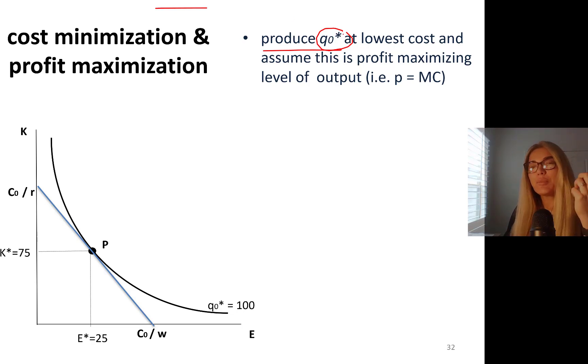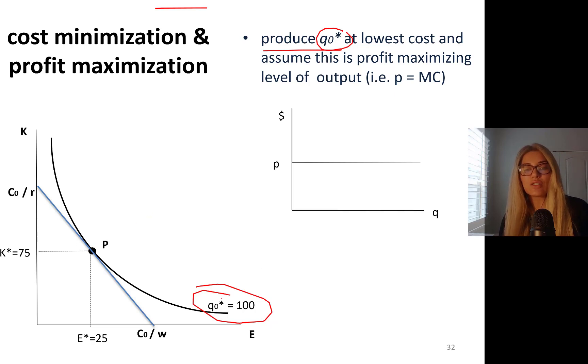If you are indeed producing at the profit maximizing level of output q*, then when you do cost minimization, if you focus on this level when you minimize your cost, then you're actually getting profit maximization. So let's say we got this q0* - how did we get it?